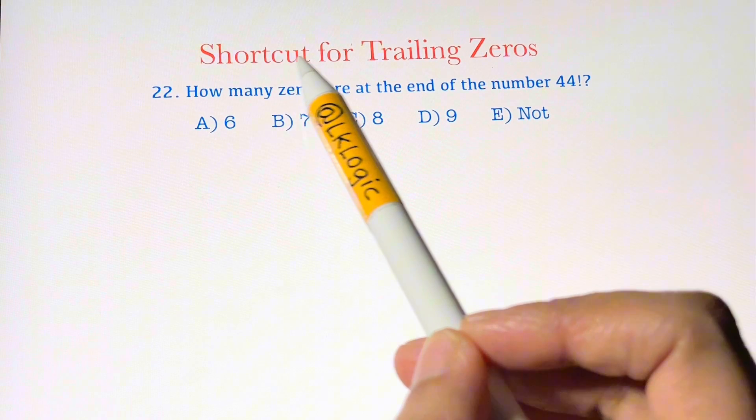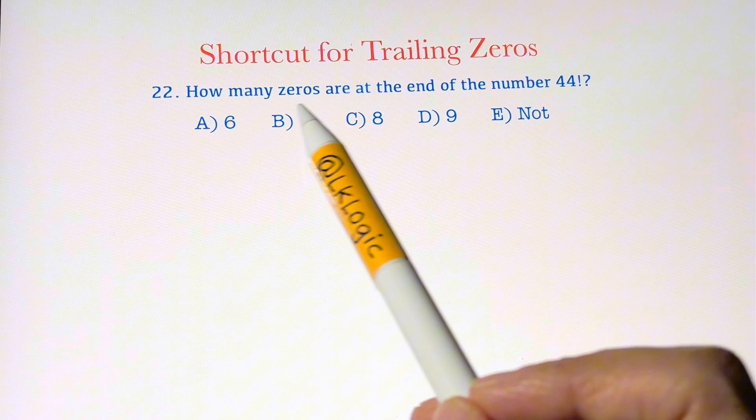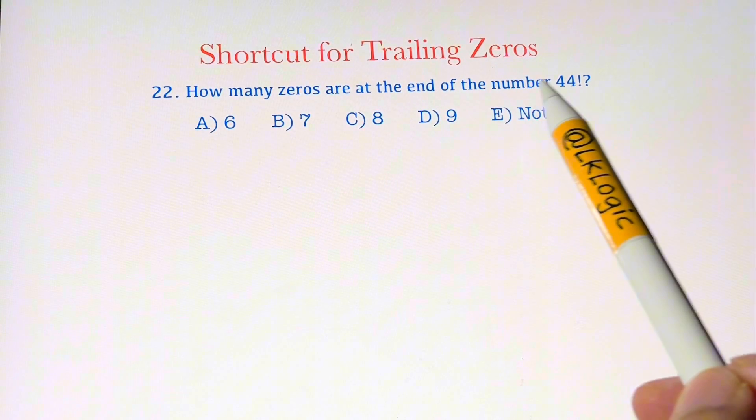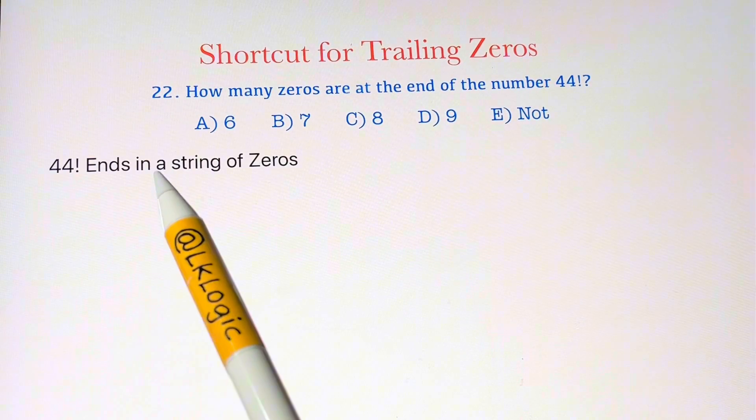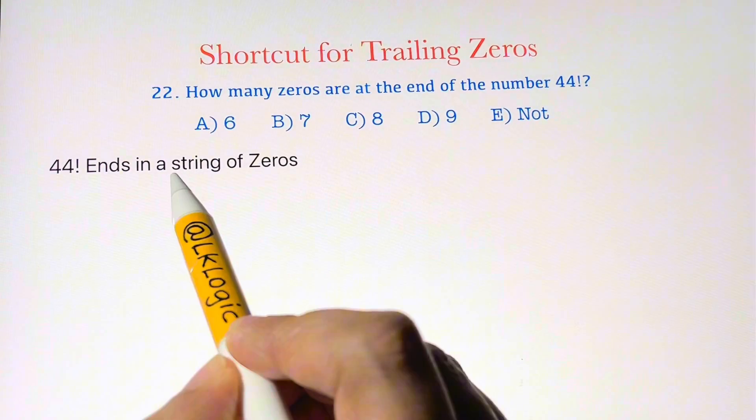Hi guys, in this video I'm going to show you a shortcut for finding trailing zeros. How many zeros are at the end of the number 44 factorial? So 44 factorial ends in a string of zeros.